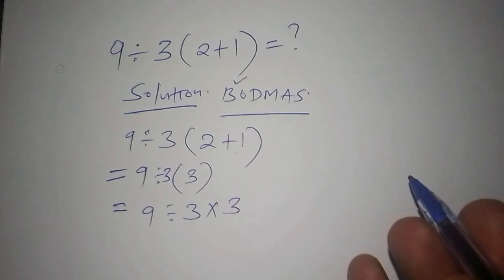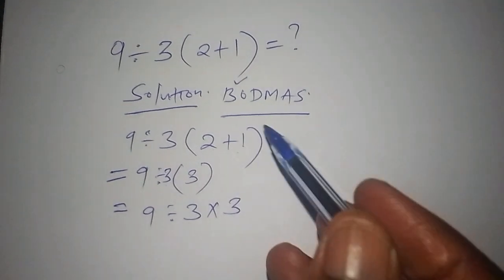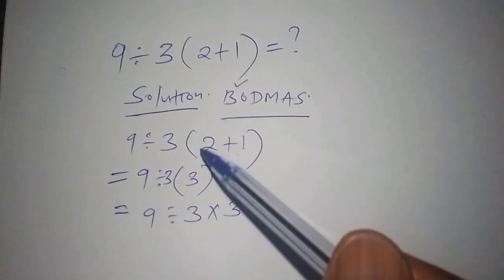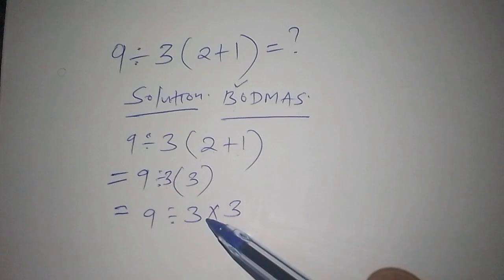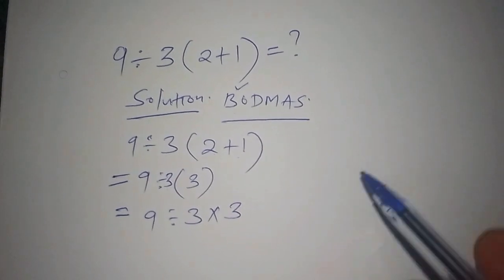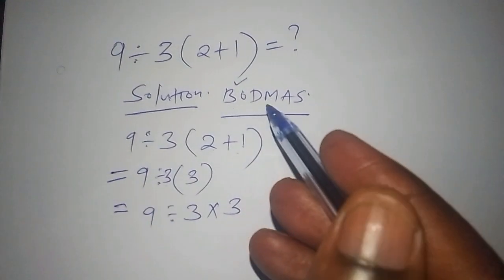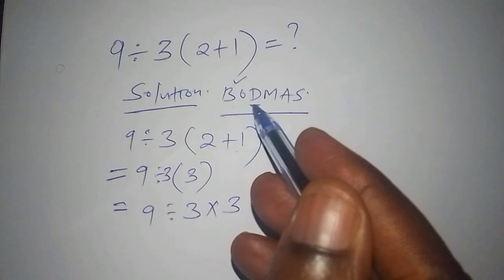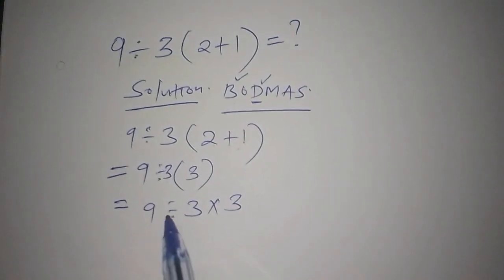Once we've reached there, we look at our next part. We've done with the bracket, so we no longer have a bracket. We shall move to division, that is D, which stands for division. Let us work out this division.